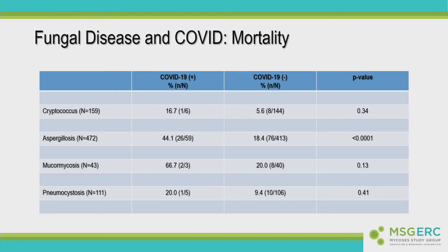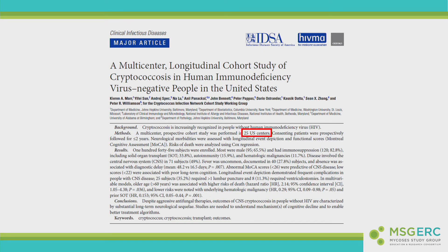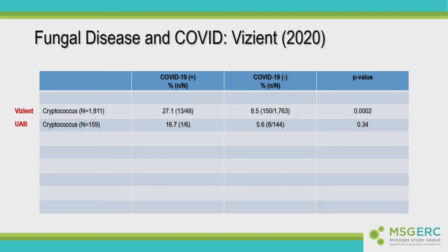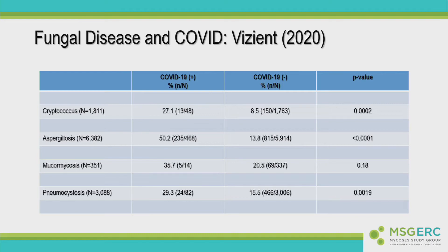The downside of the institutional approach is it's a single institution, and some of the numbers are quite small. This is where we can transition onto multicenter studies and take advantage of institutional and benchmarking data sources, one of which is Vizient. Vizient is a benchmarking data source — probably all of your academic institutions pay to have their data sent to Vizient — amounting to about 500 institutions and about 2.1 million inpatients annually. Now we can look at UAB's COVID and fungal experience in a much larger population across 500 institutions for a variety of different types of fungal disease, and the denominators are much more stable.